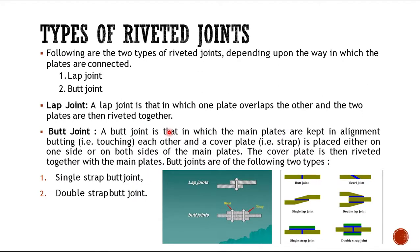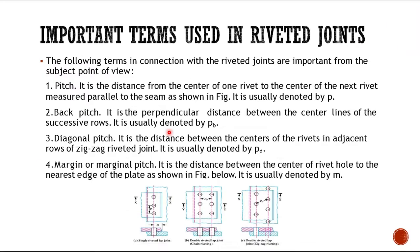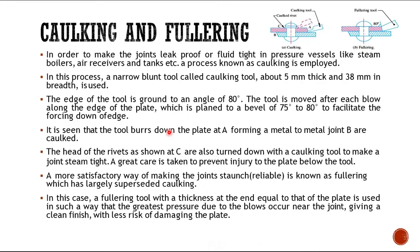That's how rivets are joined. We learned two types of joints: lap joints and butt joints, and single riveted joints and double riveted joints with related terms. Important terms included pitch, back pitch, diagonal pitch, and marginal pitch. There were also two processes — caulking and fullering — used for filling material or making a rivet joint leak-proof.